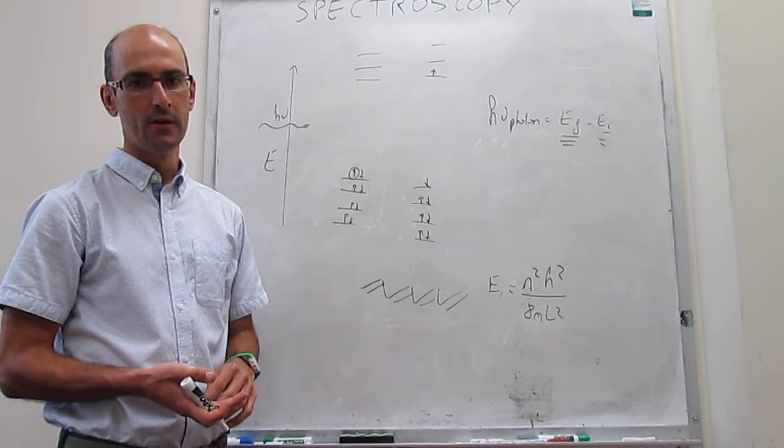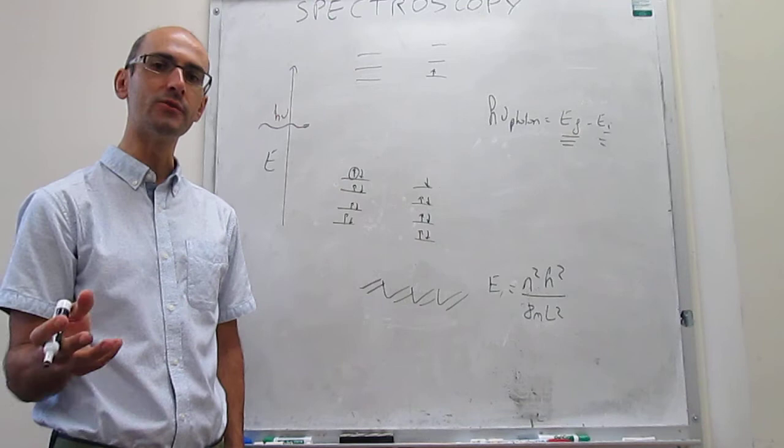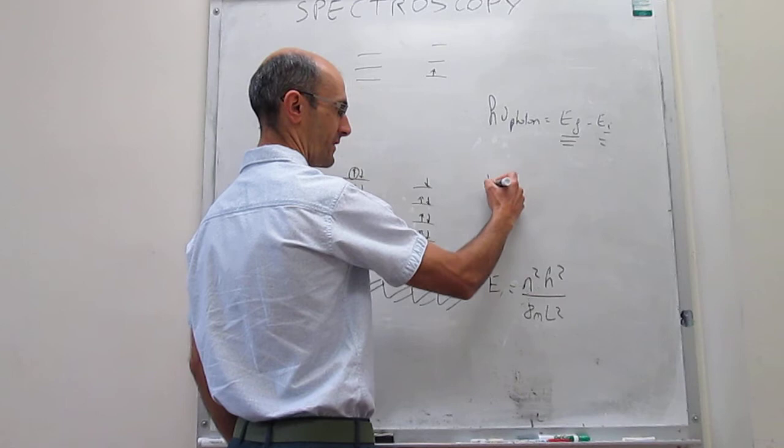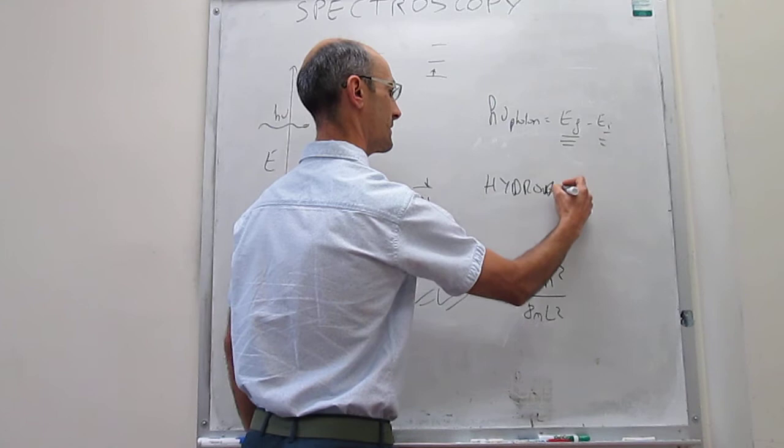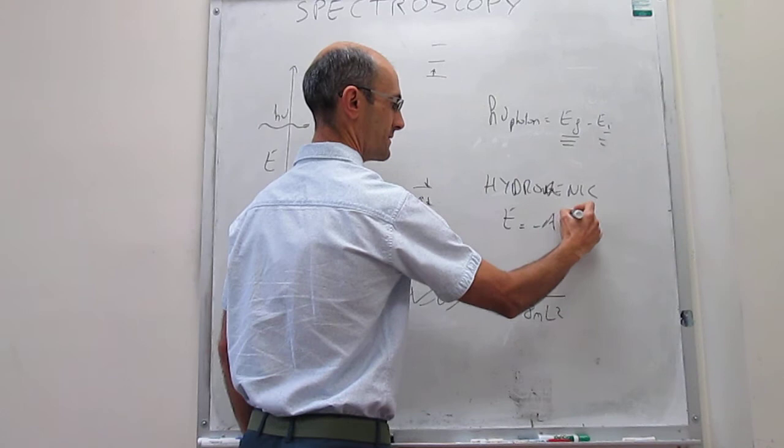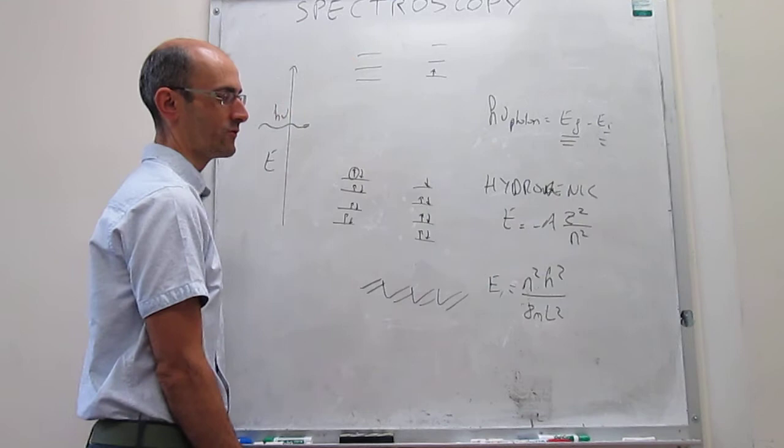There's another example where we have quantitative equations for electronic state energies: hydrogenic atoms. For hydrogenic atoms, the energy of a particular state is a constant times the effective nuclear charge squared over the principal quantum number squared.